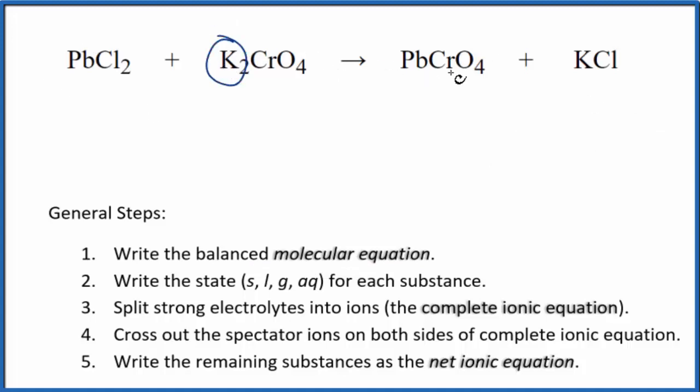I have two potassium atoms here, just one here. Let's put a 2 in front of the KCl. Now I have two potassiums, two chlorines, two chlorines here, lead, lead, and then we have the chromate ion here and here. So that's the balanced molecular equation.